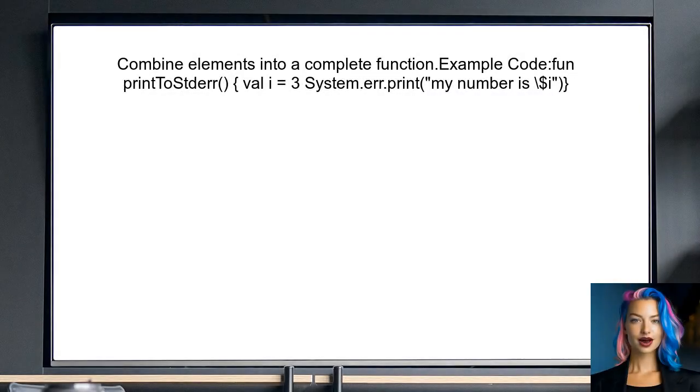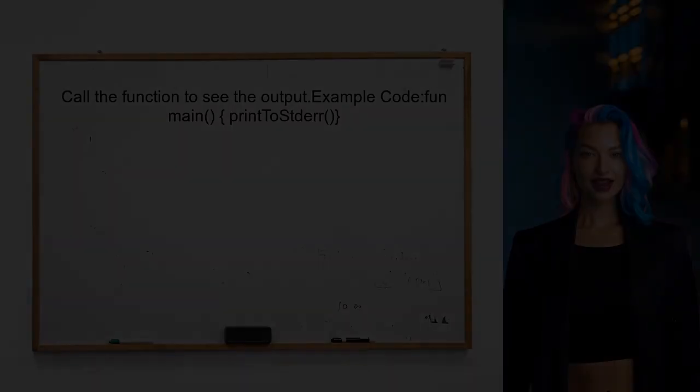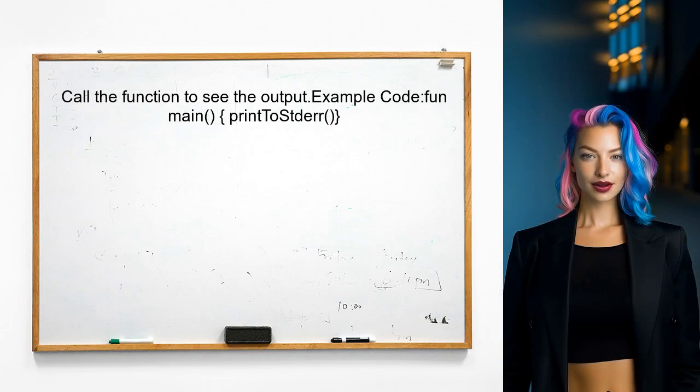Now the user can combine these elements into a complete function. This function will print the message to standard error using the string template. Finally, the user should call this function to see the output in the standard error stream. This will ensure that the message is displayed correctly.